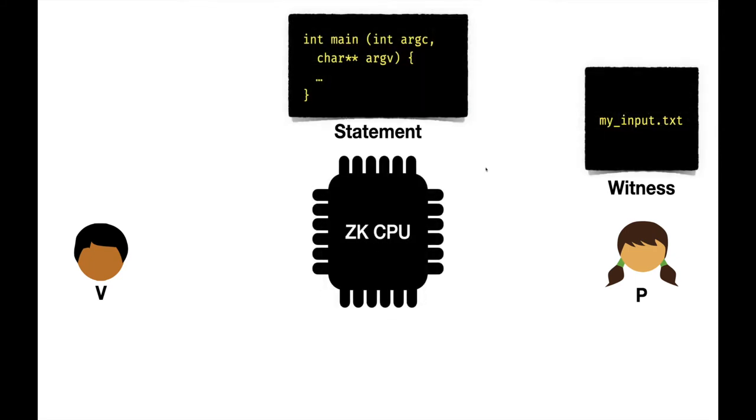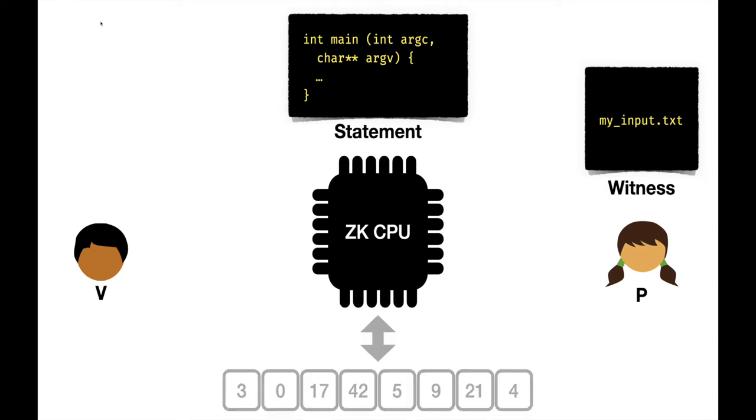Therefore, a recent line of work has pushed for zero-knowledge machines that, in essence, run a powerful CPU inside a zero-knowledge protocol. The advantage of this approach is that we can describe the proof statement as a program written in a high-level programming language like C. This allows users to easily describe extremely complex proof statements and has the added benefit that the engineer who designed such a system requires very little cryptographic training.